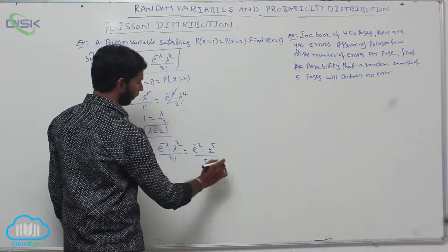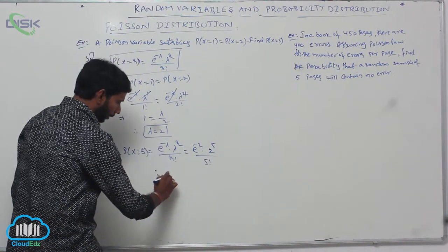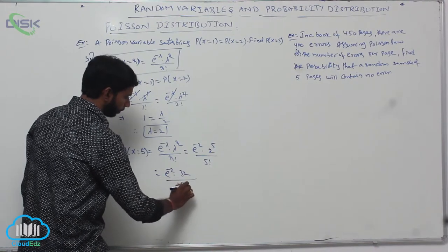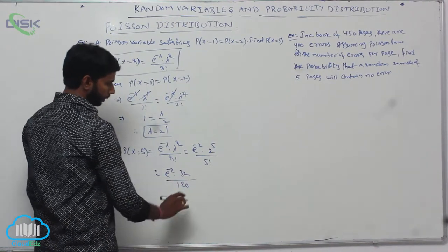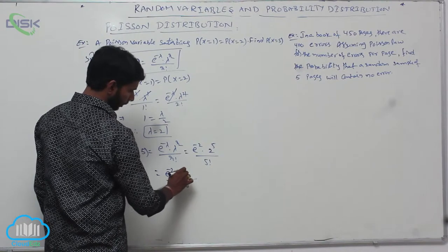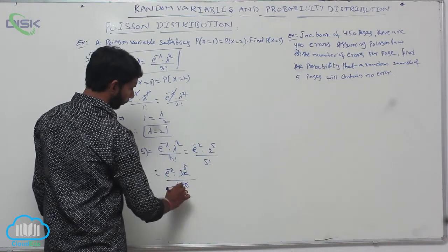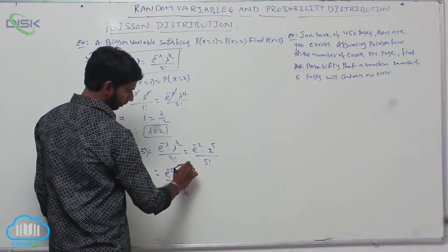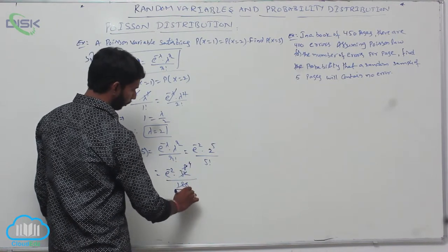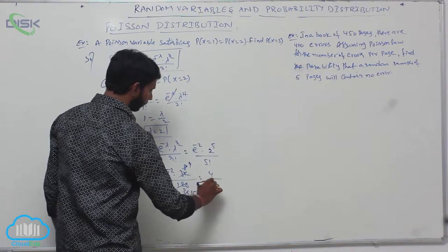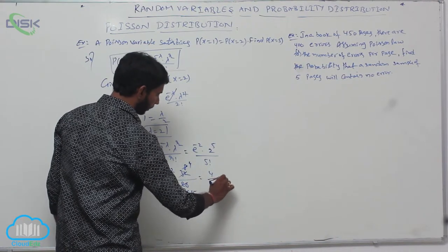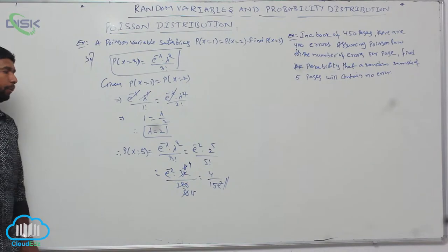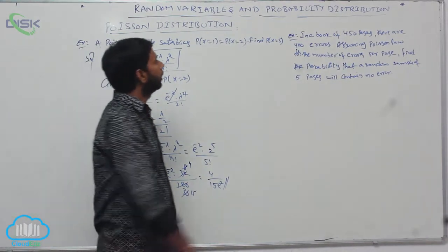2 power 5 by 5 factorial is equal to e power minus 2 into 32 by 120. Simplifying 32 by 120 gives 4 by 15. It is equal to 4 by 15 e to the power minus 2.